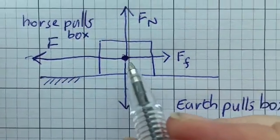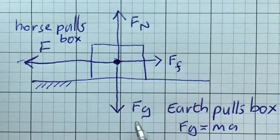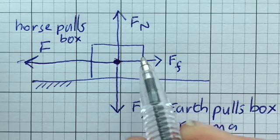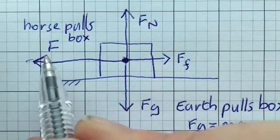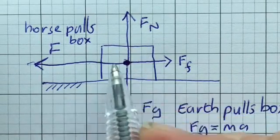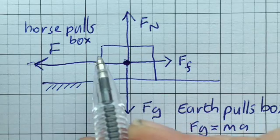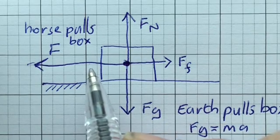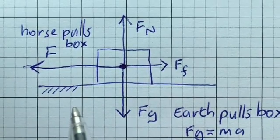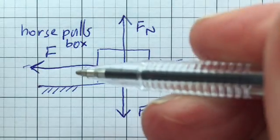So I've got the normal force, the force due to gravity, frictional force, and the horse pulling the box. The sum of all these forces is an arrow pointing this way, so the carriage is accelerating in this direction.